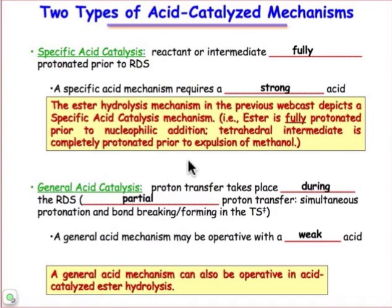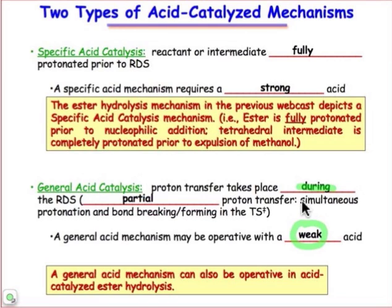What's new is the term general acid-catalyzed mechanism. In a general acid-catalyzed mechanism, we can accomplish this with a weak acid, because the proton transfer is only partial. It's taking place during the rate-determining step, which means it must be happening at the transition state. There's going to be partial bond making and bond breaking to the proton, and our transition state will need to show that bond forming and bond breaking.